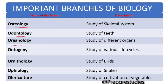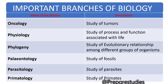Organology: study of different organs. Ontogeny: study of various life cycles. Ornithology: study of birds. Ophiology: study of snakes. Olericulture: study of cultivation of vegetables. Oncology: study of tumours.